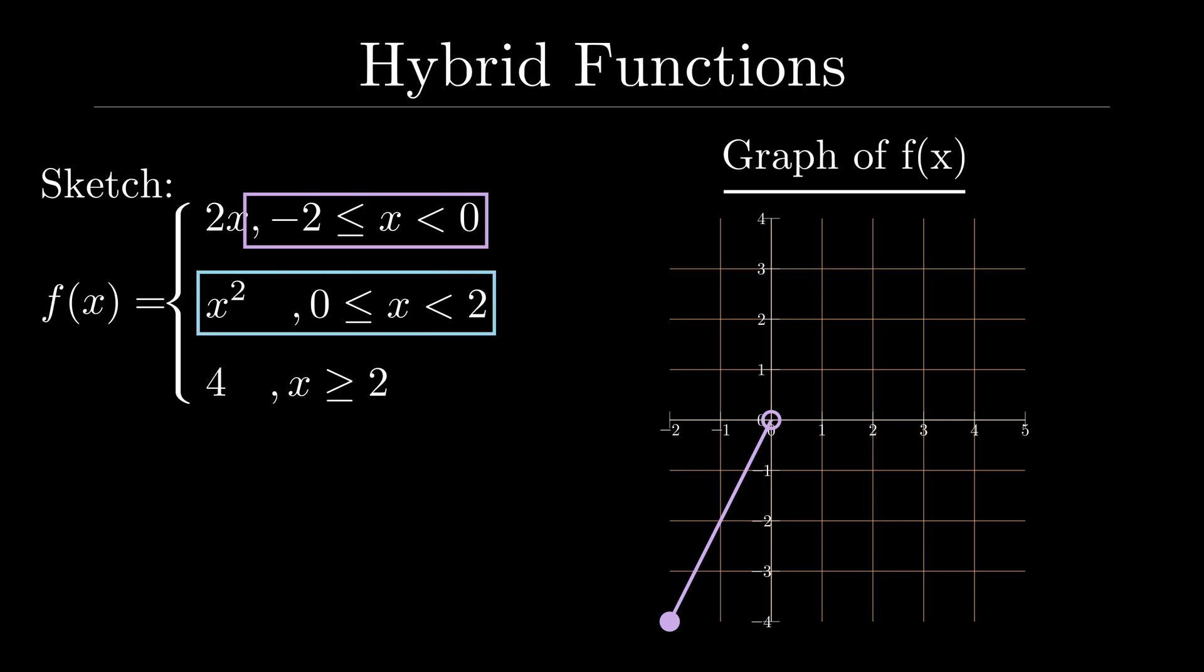For the quadratic component of the graph, we know what that looks like—it's kind of like a U-shaped graph—but we need to consider it within its domain. So here we are including the point zero and excluding the point two. So we have a closed circle to indicate that zero and an open circle to indicate the two.